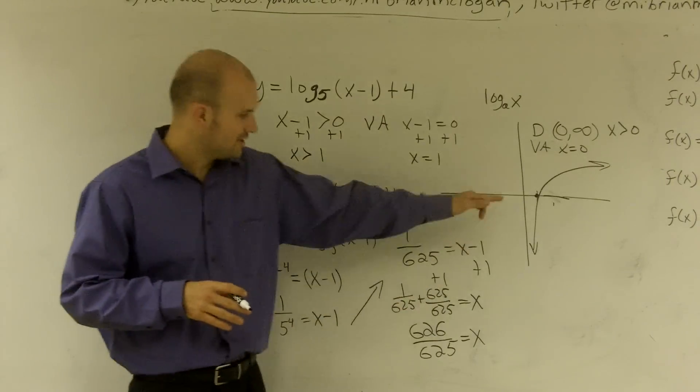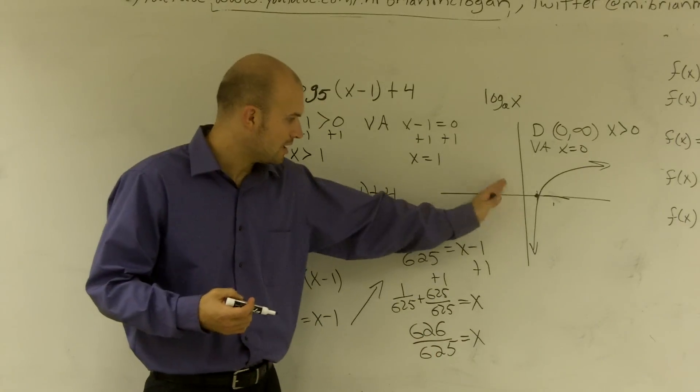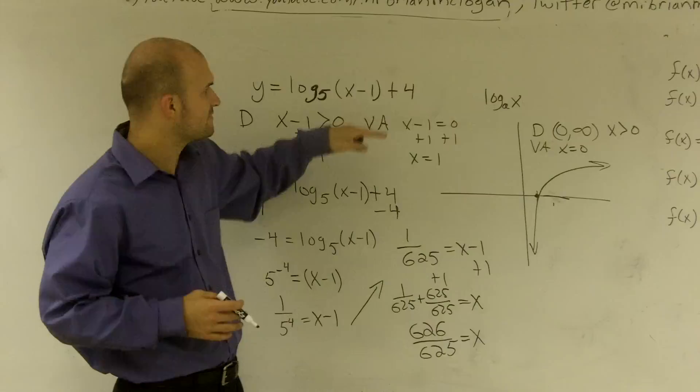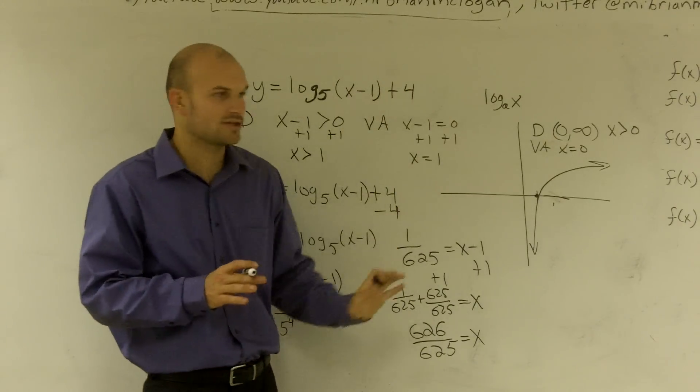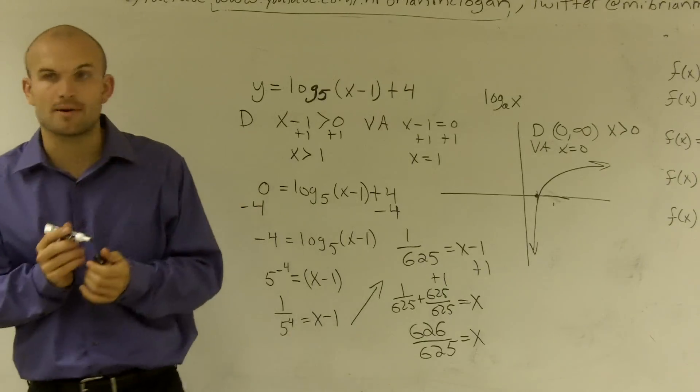So if I was going to graph this, it would be a decimal, one point something very small. Really all I'm doing is shifting my graph over and also shifting it up four units. I'm not going to show you the graph, but notice it looks like that. That's how you solve that problem.